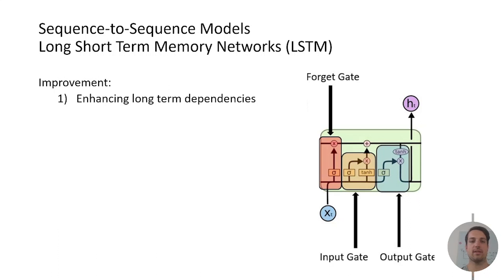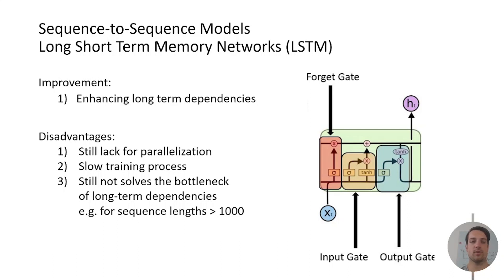The improvement of the forget gate is that the long-term dependencies are definitely enhanced but we are still running into several disadvantages. For example we don't solve the problem for parallelization. It has a very slow training process and it still doesn't solve the bottleneck of long-term dependencies completely, especially for sequence lengths longer than 1000 steps.